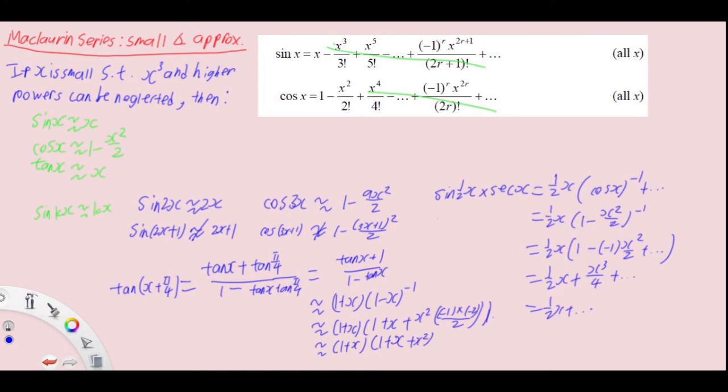So we have 1 plus x times 1 plus x plus x squared. So we do it term by term, 1 plus x times 1 gives me back 1 plus x. 1 plus x times x will give me x plus x square. 1 plus x times x square will give me x squared plus x cubed, but because I don't need x cubed or above, I can ignore that, leaving me with 1 plus 2x plus 2x squared. So there we have it, this small angle approximation where x cubed and higher powers are neglected.